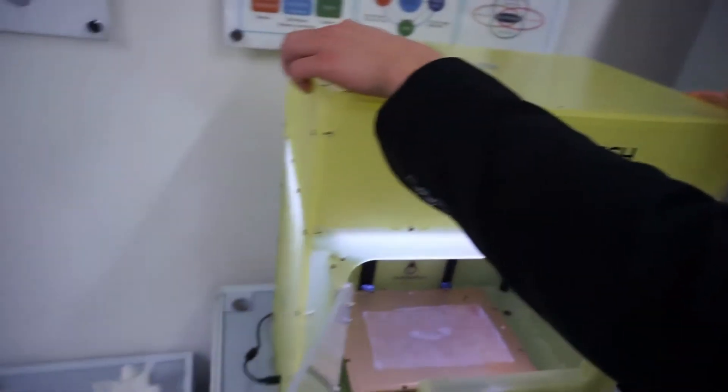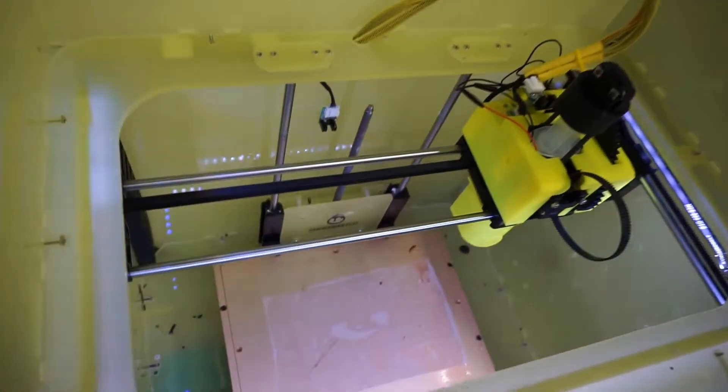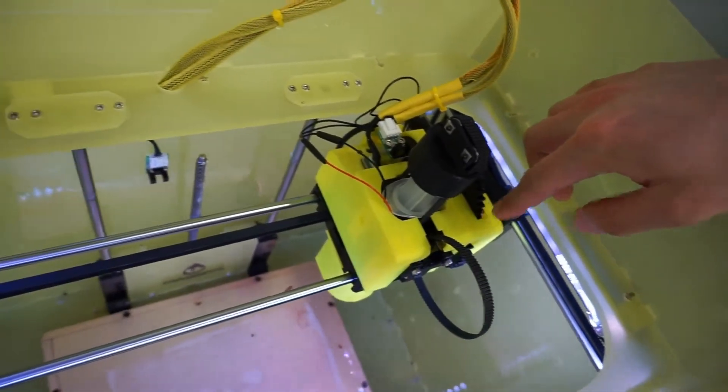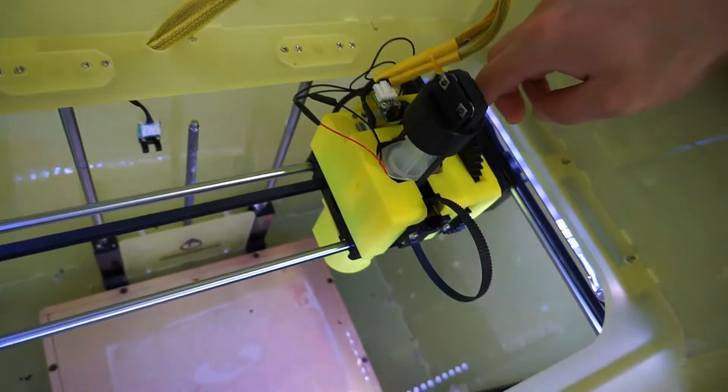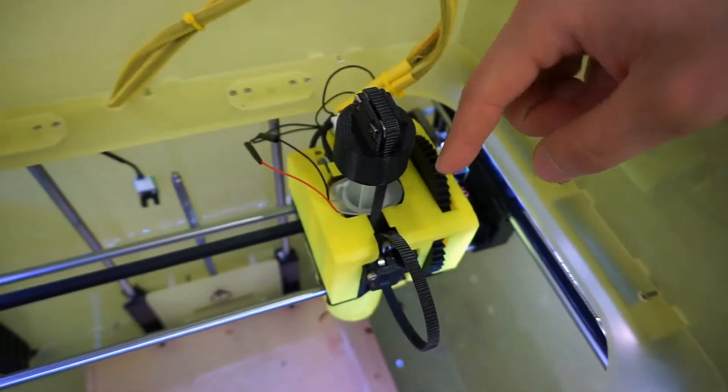The printer has a removable top for easy access to the extruder. The extruder works similarly to the RichRap syringe extruder, where a belt pushes down the plunger. Obviously, it includes a heating system that keeps all the syringes warm, including the nozzle, while printing, avoiding the chocolate from setting within the syringe.